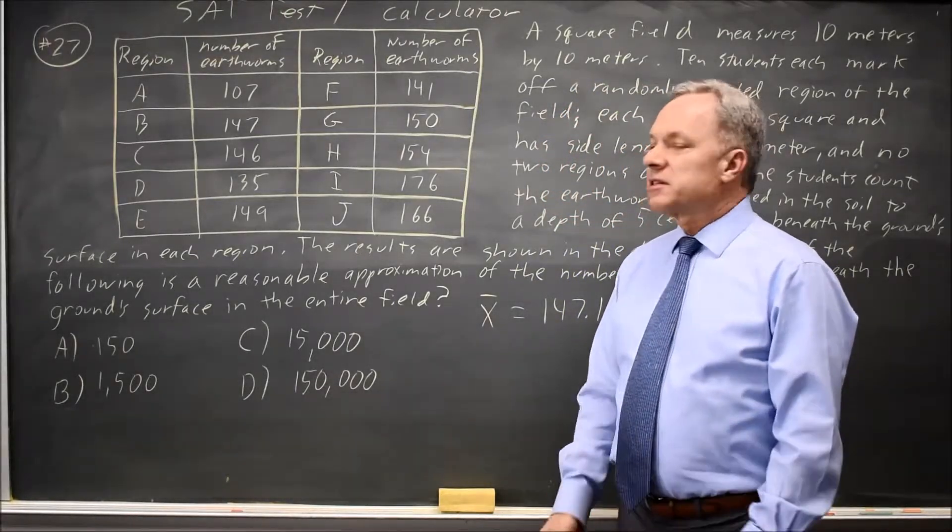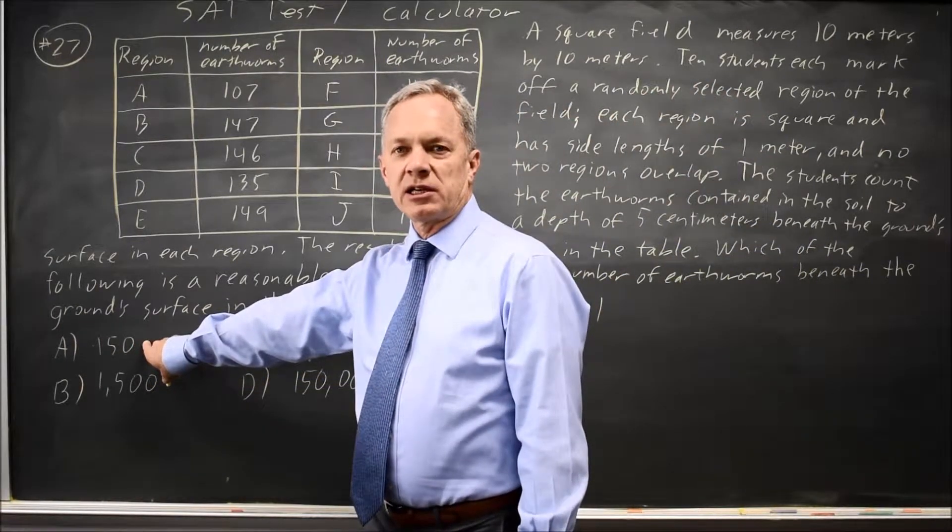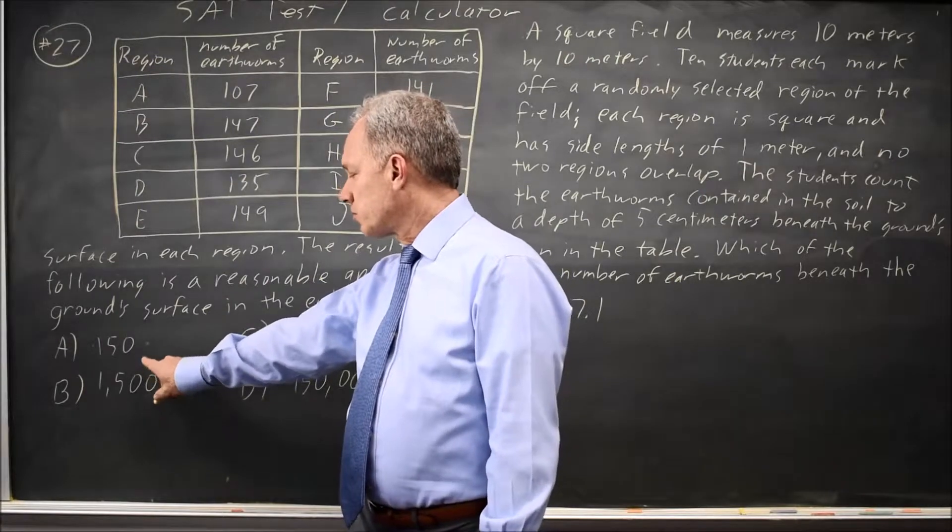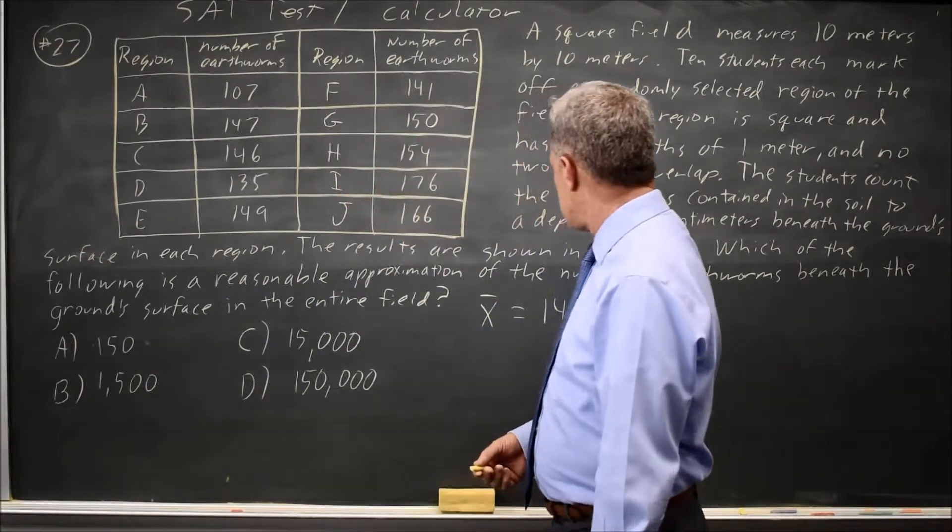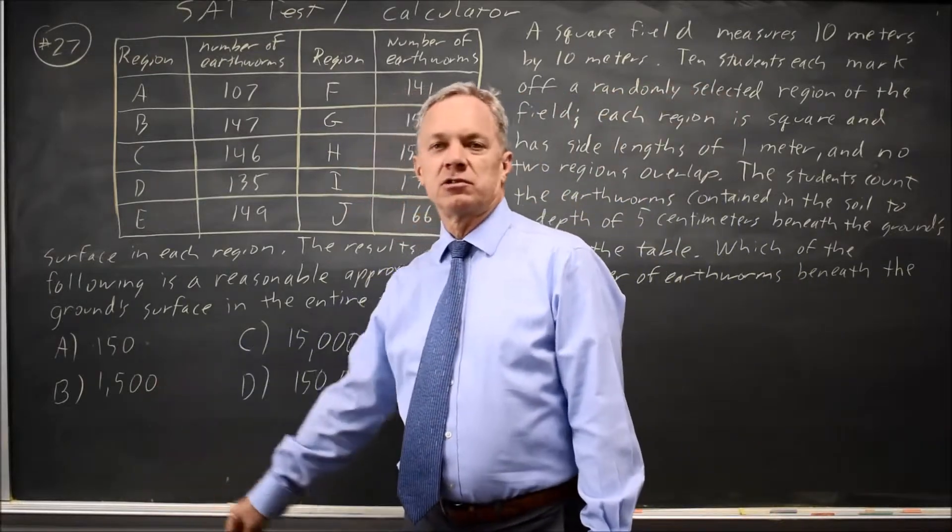And if that's the mean, that's close to 150, but that is not what College Board is asking. Total number of earthworms found was 1,471, which is close to 1,500, choice B,